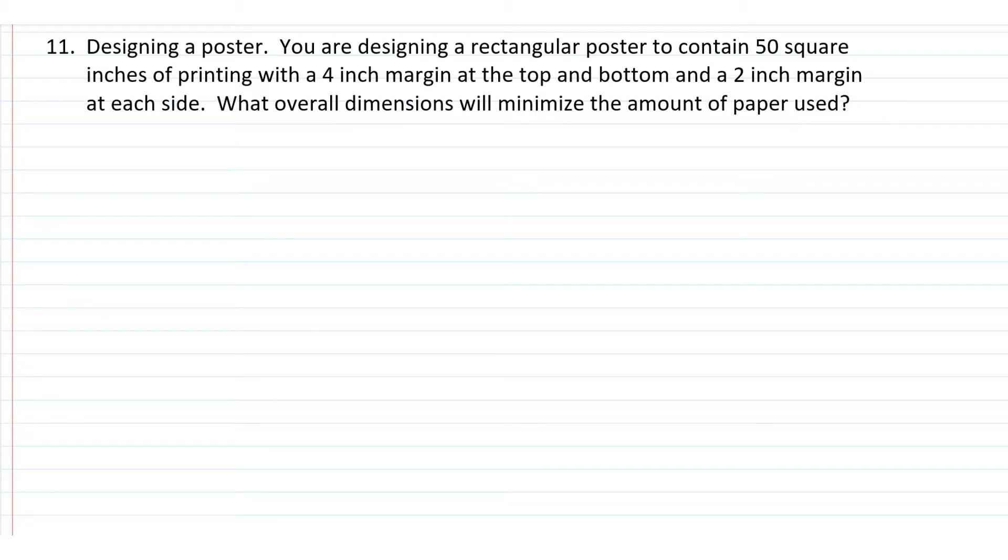Whenever a geometric shape is mentioned, it's important to start drawing a picture. I'm going to start drawing a rectangular poster. It doesn't have to be realistic. I'm not sure which way this poster is going to face, if it's going to be more vertical than horizontal. It doesn't really matter. Just draw a rectangle. We're going to have a margin of 4 inches at the top and 4 inches at the bottom, and then a 2-inch margin on either side. Now we're interested in having 50 square inches of printing, and we're interested in the dimensions of this piece of paper.